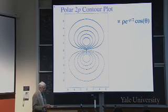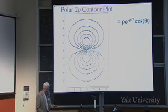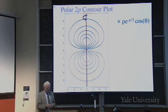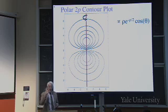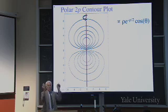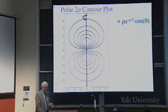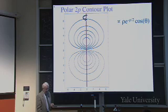Or you could make a contour plot showing how big the function is on a slice through the nucleus. It's ρ × e^(−ρ/2) × cos θ — that multiplied by a constant is the wave function. It's positive at the top and negative at the bottom. Notice it doesn't depend on φ, the angle of rotation around, so we can take that picture and rotate it to give a three-dimensional dumbbell. We're just looking at one slice here to be explicit.